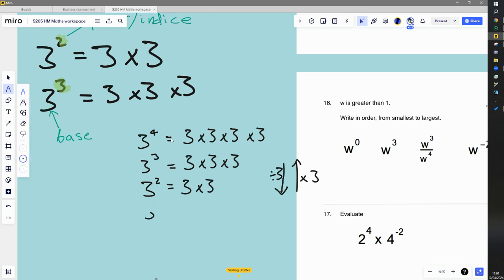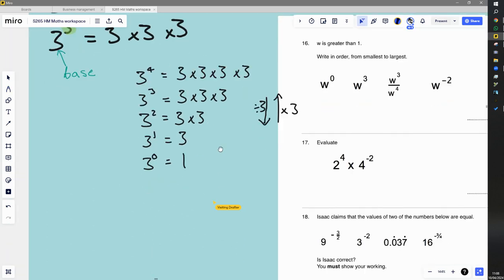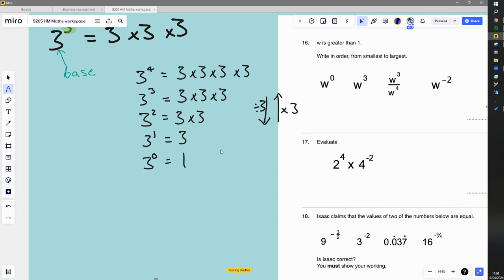So if I were to go all the way down to three to the power of one, then that would be just three. So we've got four threes, three threes, two threes, one three. So what about three to the power of zero? That's a little bit strange. Some people might say it's zero, but because we're dividing it by three each time, three divided by three is not zero. Three take away three is zero. Three divided by three is one. So that takes us to the zeroth power - three to the power of zero.